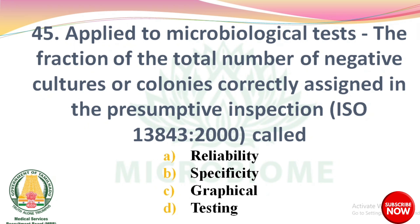Next question: As applied to microbiological test, the fraction of total number of negative cultures or colonies correctly assigned in the presumptive inspection — options: reliability, specificity, graphical, testing. The right answer is option B: specificity.